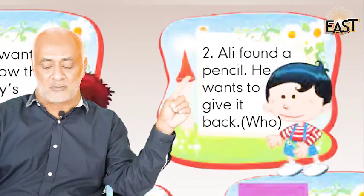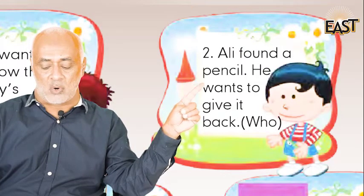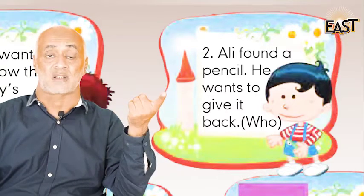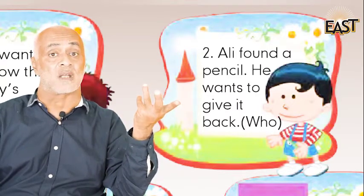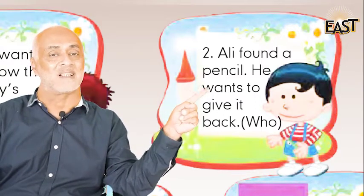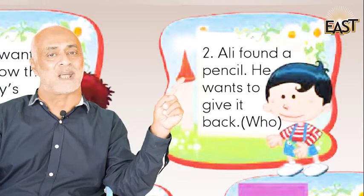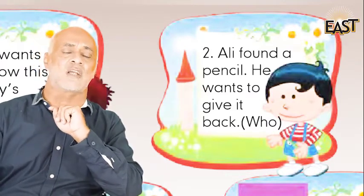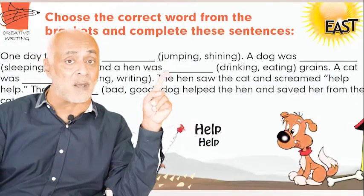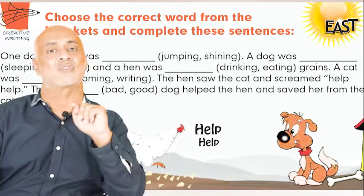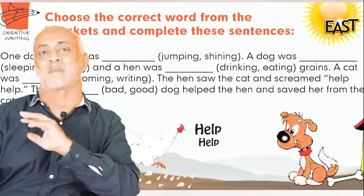Ali found a pencil and he wants to give it back. Ali ko ek pencil mili hai, woh us ko wapas karna chahta hai, lekin woh kis ko wapas kare? Naam kya hai? To woh kahega: 'Whose pencil is this?' — very good! Chalein, aaj ke liye itni kafi hai. Aap woh filling the blanks karein aur us ke baad yeh two questions banaein. Okay, Allah Hafiz.